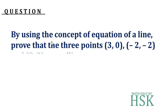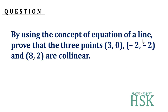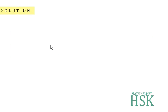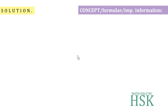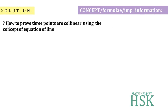The question is: using the concepts of equation of a line, prove that the three points (3, 0), (-2, -2), and (8, 2) are collinear. To solve this question we require certain concepts on how to prove three points collinear using the concept of equation of a line.